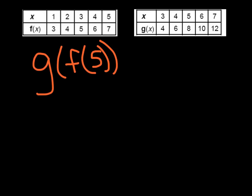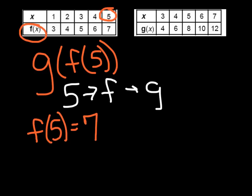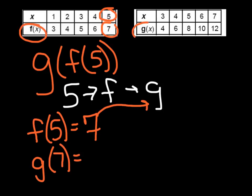Alright, you give this one a whirl with the same tables. Go ahead, pause it, try it on your own, then turn it back on and compare. Now that you're back, hopefully your setup said 5 into f into g. This is read g of f of 5. Finding f of 5 first: go to the f table, input x = 5, output is 7. Now plugging that into g: g of 7 — go to the g table, input 7, and hopefully you got an output of 12.